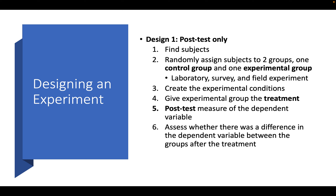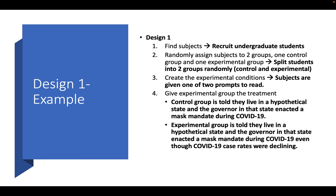The key here is random. Random assignment can be achieved by using a random number generator, assigning subjects a number, and then randomly selecting numbers until the subjects have been exhaustively placed into either a control group or an experimental group. For instance, in finding subjects, we could recruit undergraduate students, split them into two groups randomly by assigning each student a specific number, then performing continual draws through a random number generator. These numbers are associated with either a treatment group or a control group.